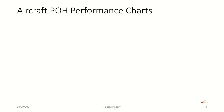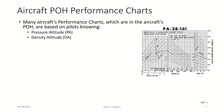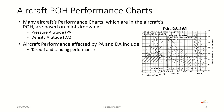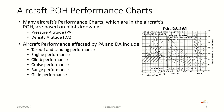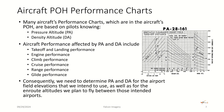In regards to the pilot operating handbook performance charts, many of the aircraft's performance charts are based on the pilot knowing what the pressure altitude and density altitude is at the airport they intend to take off and land from, as well as the en route altitude on their cruise. Aircraft performance affected by pressure altitude and density altitude includes takeoff and landing performance, engine performance, climb performance, cruise performance, range performance, and glide performance. Consequently, we need to determine as pilots what the pressure altitude and density altitude is for the airport field elevations we intend to use for takeoffs and landings, as well as for the en route altitudes we plan to fly between those intended airports.